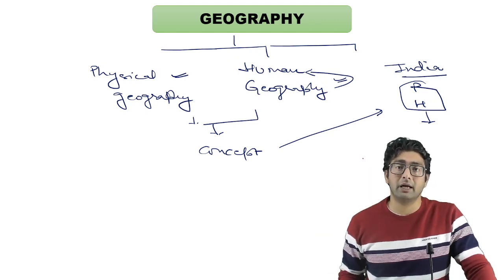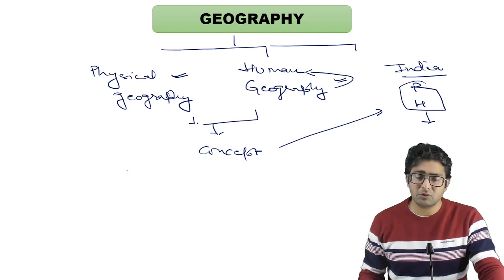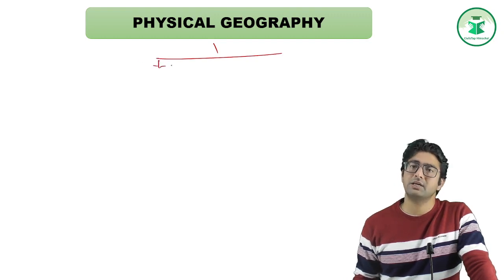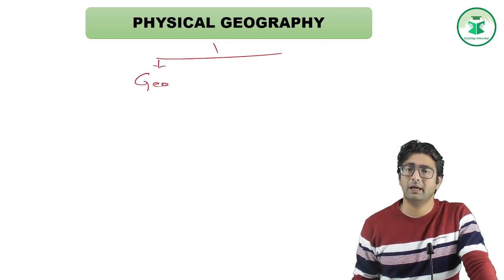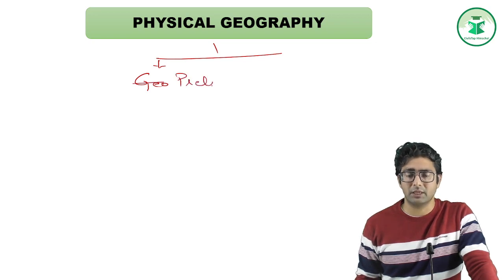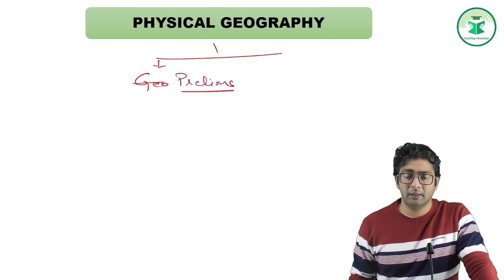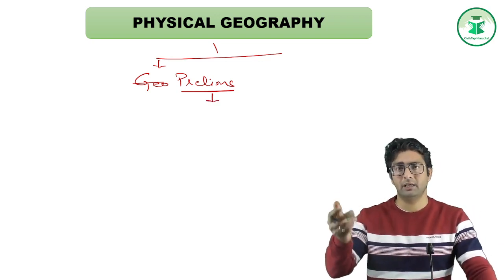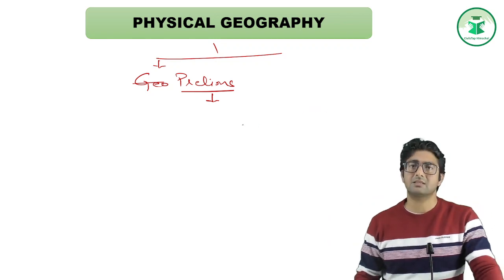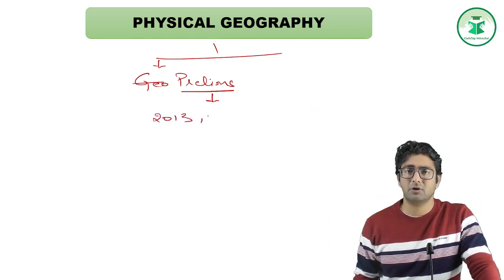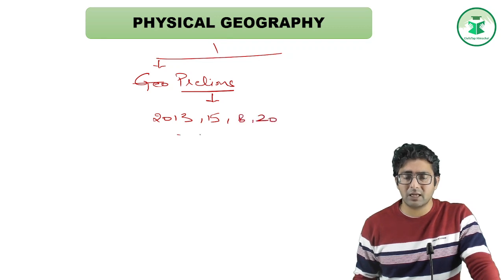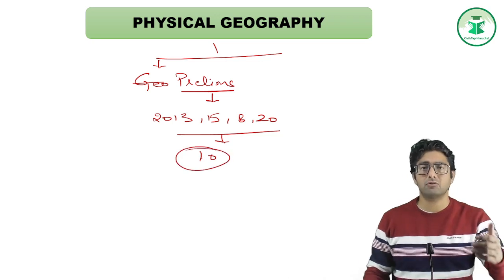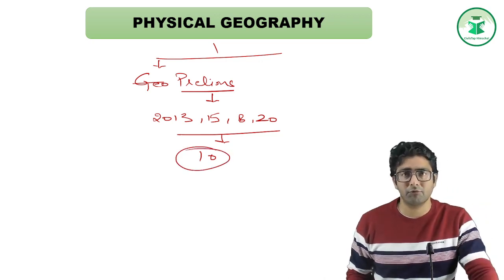Now, geography is asked in the prelims General Studies paper. In prelims, there are 100 questions in GS. When I analyzed the papers from the last 4 exam years — that is 2013, 2015, 2018, and 2020 — I concluded that almost every year about 10 questions have been put up from the domain of geography in the prelims examination.